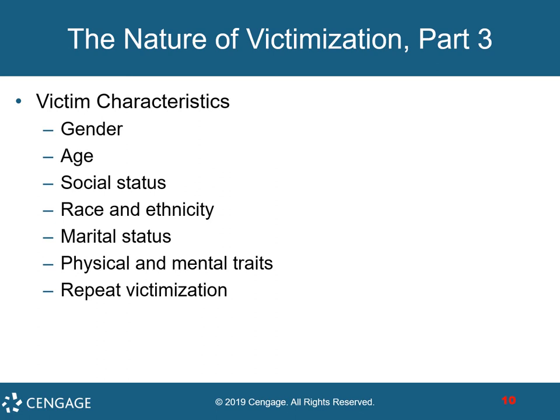Now let's talk about victim characteristics. Gender plays a role — males are somewhat more likely to be victims of nonviolent crimes, with sexual assault excluded. Females are most likely to be victimized by someone they know, whereas males are most likely to be victimized by a stranger. Age also plays a role — the young are more likely to be victimized than the elderly, though the elderly are targeted for fraud and scams. In terms of social status, the poor are most likely to be victims of both violent and property crimes, and the homeless suffer high rates of assault. As far as race and ethnicity, African Americans are significantly more likely to be victims of violent crime compared to European Americans. When it comes to marital status, those who have never married suffer higher rates of victimization, while widows and widowers have the lowest victimization risk.